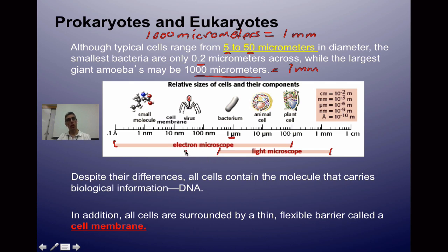When comparing prokaryotic and eukaryotic cells, despite their differences, all cells regardless of type contain DNA, and all cells contain a thin, flexible barrier called a cell membrane.